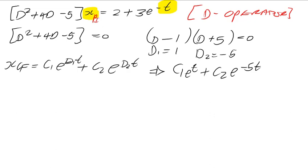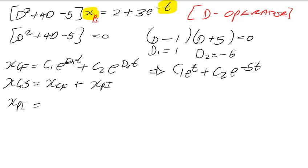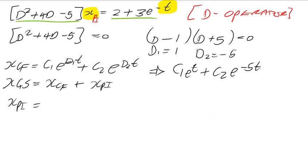Remember, the whole point is to get the x general solution, which equals x_cf plus x_pi. Now we find x_pi. Go back to the original equation and make x_pi the subject of the formula by dividing by D² + 4D − 5. So x_pi equals (2 + 3e^(−t)) divided by (D² + 4D − 5).